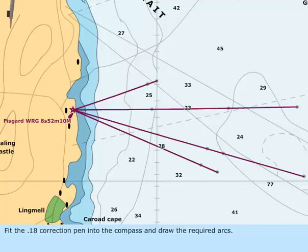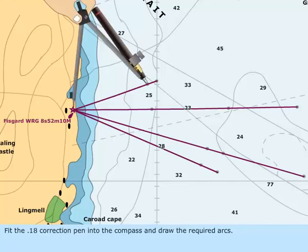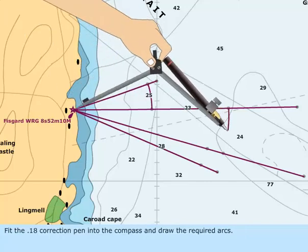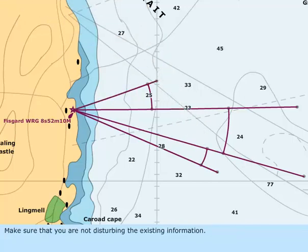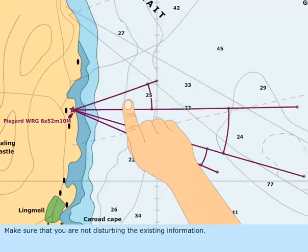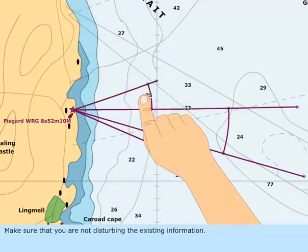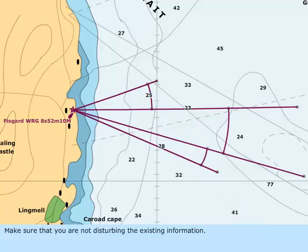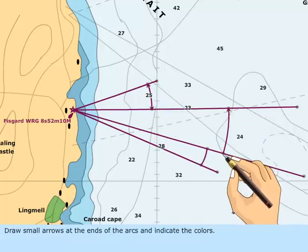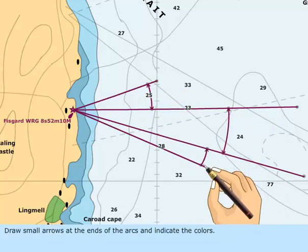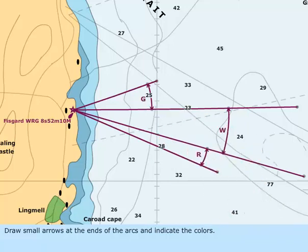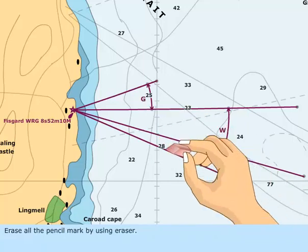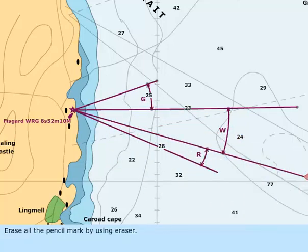Fit the 0.18 correction pen into the compass and draw the required arcs. Make sure that you are not disturbing the existing information. Draw small arrows at the ends of the arcs and indicate the colors. Erase all the pencil marks by using the eraser.